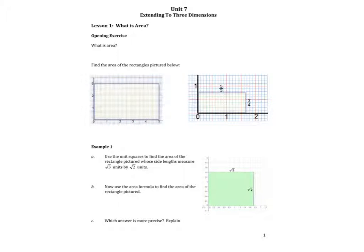Unit 7, extending to three dimensions. Student outcomes for this lesson is to review the area formula for rectangles with rational side lengths and prove the area formula for an arbitrary rectangle.